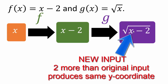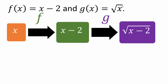This x is the new input you plug into g. If you want the same output as before, this x would have to be 2 more to begin with, so that when you subtract 2, you get the same result. The new input has to be 2 more so that you get the same outputs as the original function g.